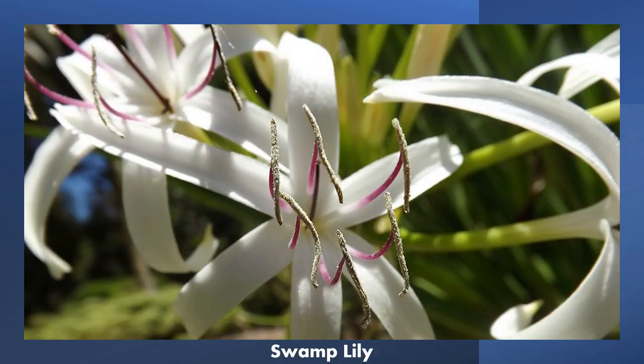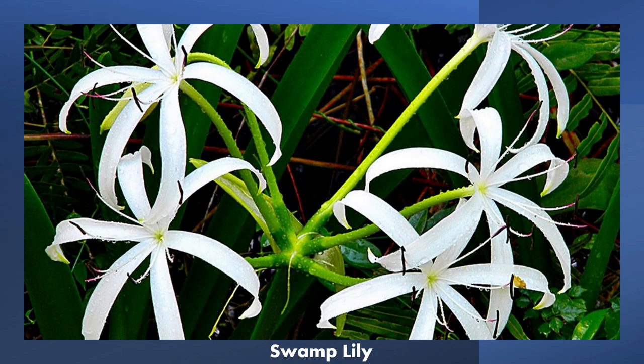The flowers of the swamp lily are showy, white, and fragrant. There are 6 separate, narrow petals in total, which can range from 4 to 6 inches long. There are 2 to 6 flowers in total on a long, single stalk.